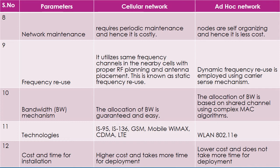Based on bandwidth mechanisms: the allocation of bandwidth is guaranteed and easy in cellular network. In ad hoc network, bandwidth allocation is based on a shared channel using a complex MAC algorithm, because a single channel is shared by more than one device.